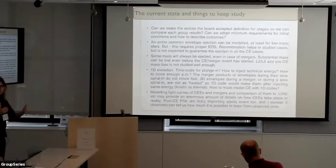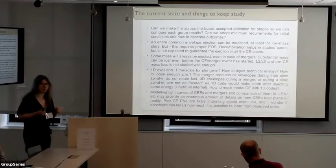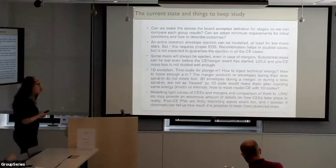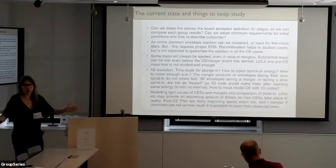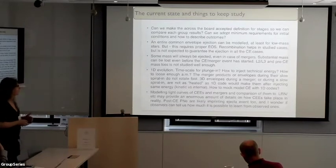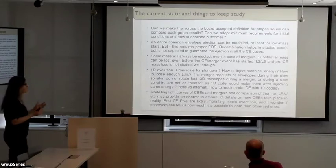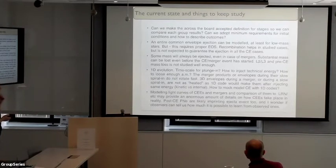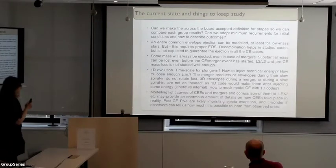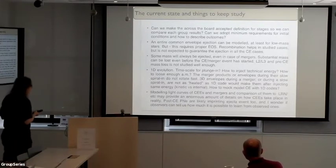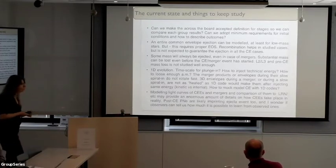L2/L3 mass transfer is not studied well enough — there are some very old analytics, not very convincing, and almost no simulations. We want to do 3D evolution, but we cannot do it for all possible cases. We need to find a way to model it in 1D. We need recipes from 3D for 1D: timescales for how to inject mechanical energy, how to lose angular momentum. Also, merger products will not rotate very fast, and 3D envelopes are not as heated as they usually are in 1D codes — all of this creates problems we need to fix to mock common envelope models in 1D.